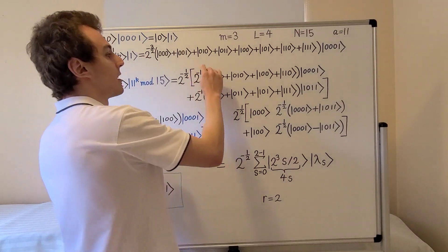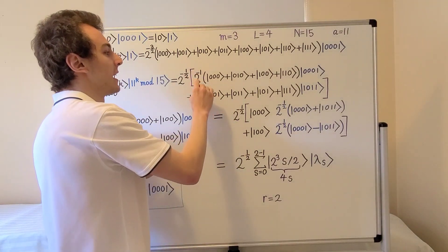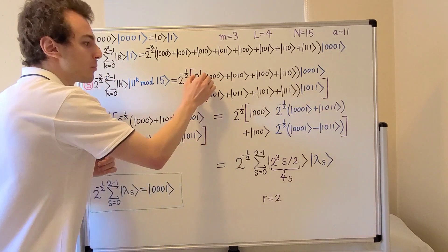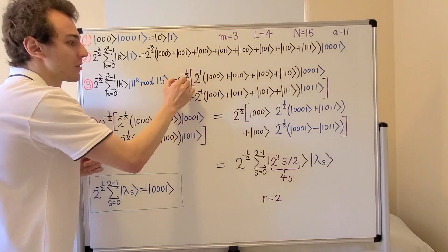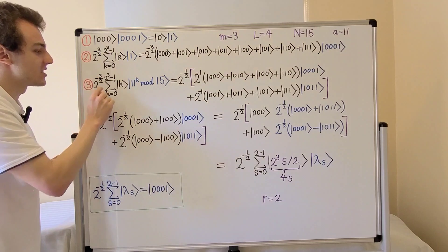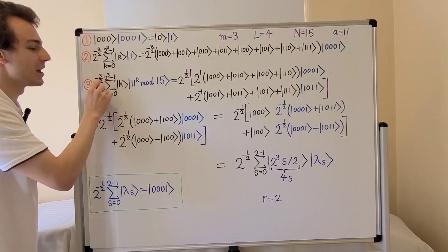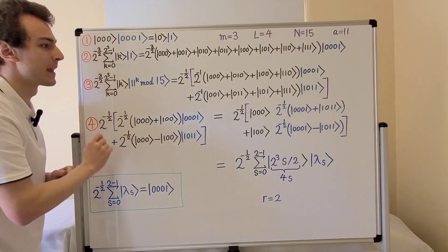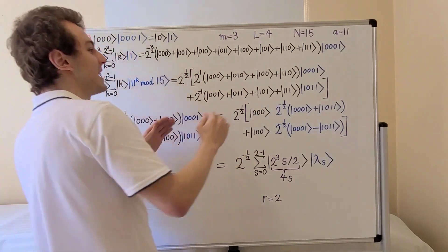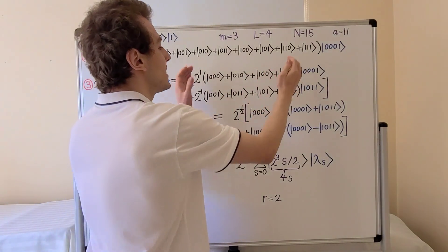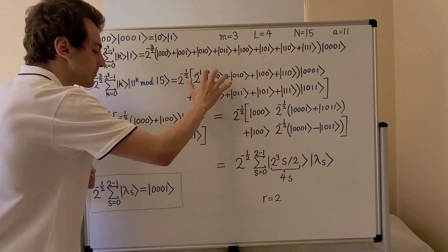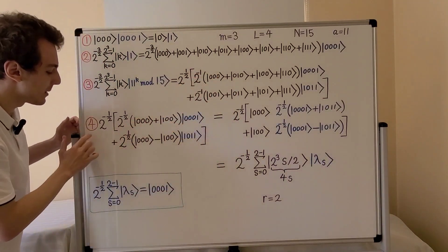We can group these terms into two groups: all even values associated with |1⟩ in the second register, and all odd values associated with |11⟩. The normalization coefficient becomes 2 to the minus one-half. Bringing this out front and collecting terms gives a factor of 2 to the minus three-halves, and we can now identify these two distinct states heading into step four.